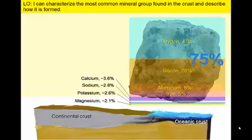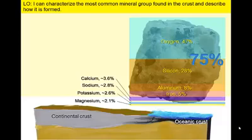In addition to oxygen and silicon, there are only six other elements that make up the majority of the earth's crust. All six of these may be familiar to you. We take in iron, calcium, potassium, and magnesium in our diet — foods like spinach are rich in all of these elements. We consume sodium as salt, and we use aluminum in a variety of forms every day.